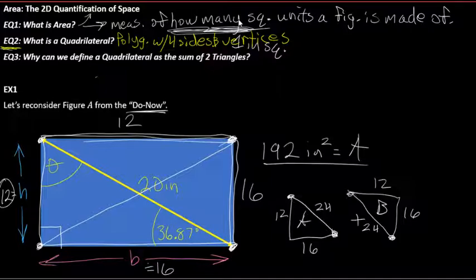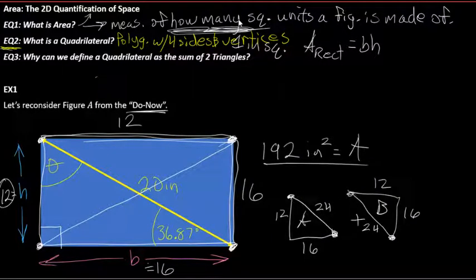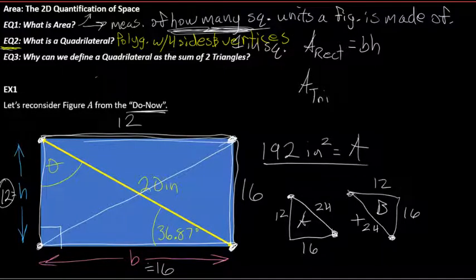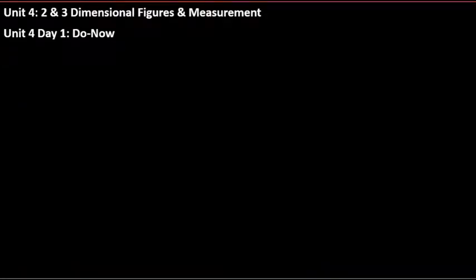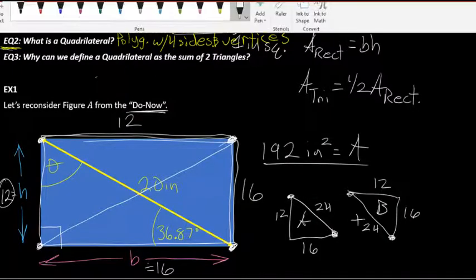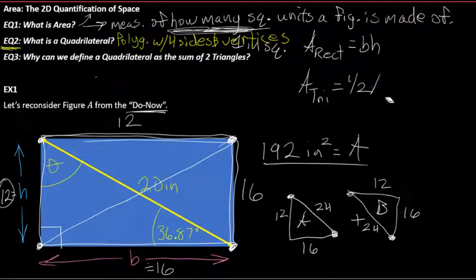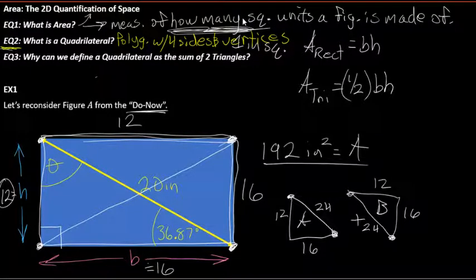From this we get two things. First, the area of a rectangle is equal to its base times its height. Second — and this is the more important one — triangle A plus triangle B adds up to the entire rectangle, so the area of a triangle is equal to one half the area of a rectangle. The area of a triangle is simply one half times its base times its height.